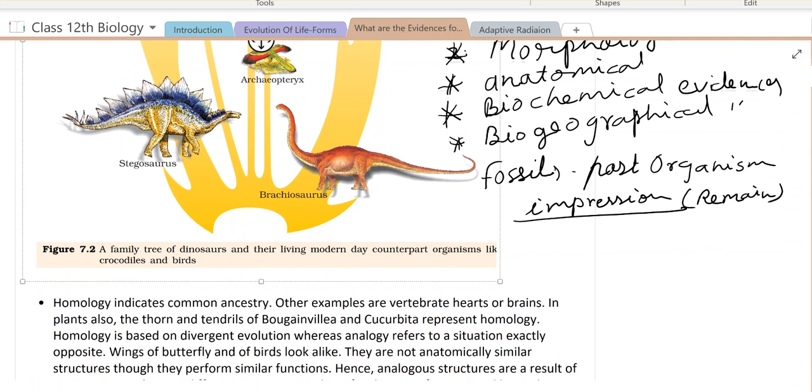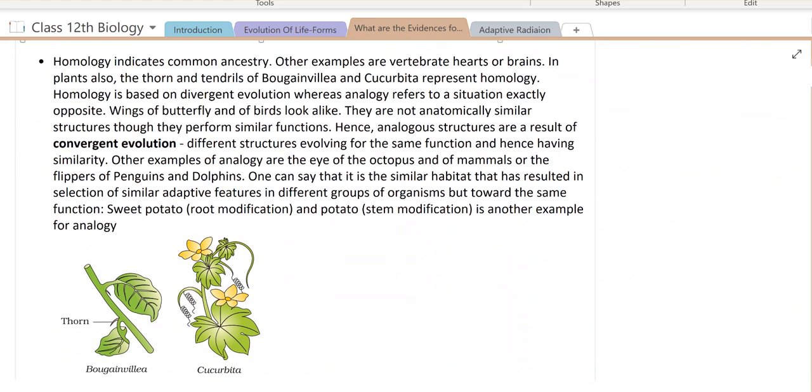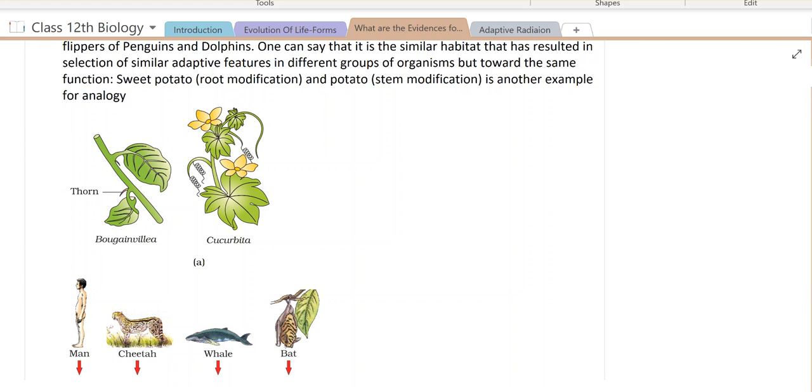Homology indicates common ancestry. Now we come to morphological and comparative anatomical evidences. See this figure: Bougainvillea and Cucurbita. Second figure shows man, cheetah, whale, bat - all are mammals. But all have different body organization. Yet there's one common thing: they're all mammals. Different surroundings led to adaptations and changes.